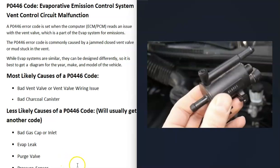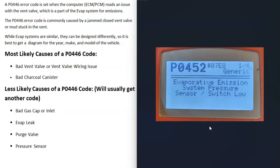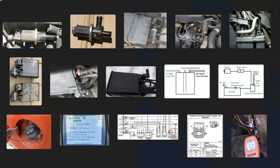The last thing on the list is the fuel tank pressure sensor, which is usually located on the fuel pump or mounted directly on the gas tank. This sensor reports back to the computer what's going on inside the system. There may not be an actual problem, but if the fuel tank pressure sensor has gone bad and is sending bad data, the computer will think there is one. Usually if that happens you'll get another code like P0452, evaporative emission system pressure sensor.